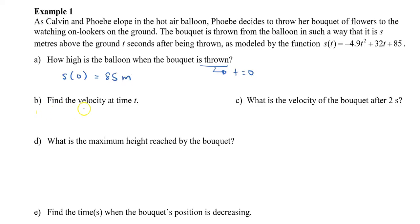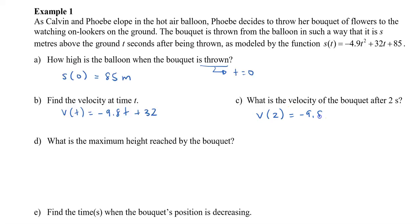Part B: find the velocity at time t. We have the position, so the velocity is simply the derivative of the position. This gives us v of t equals negative 9.8t plus 32. Now that we have the velocity, part C asks: what is the velocity of the bouquet after 2 seconds? We find v of 2 by plugging in t equals 2: negative 9.8 times 2 plus 32, which gives us 12.4 meters per second.